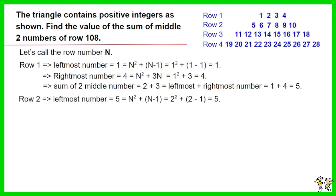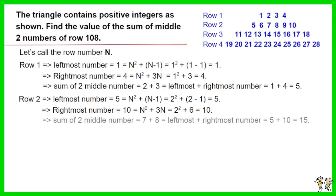The leftmost number of row 2 is 5, which equals n² + n - 1, equals 2² + 2 - 1. The result is 5. The rightmost number of row 2 is 10, which is n² + 3n, equals 2² + 6, the result is 10.